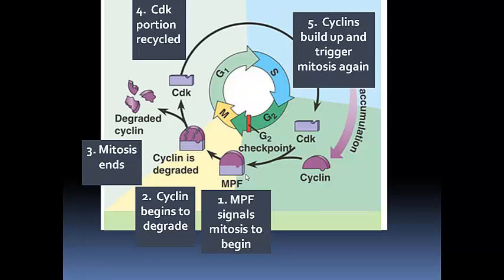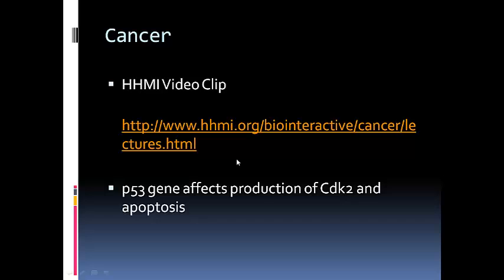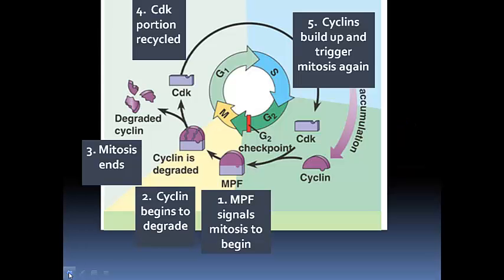The entire cell cycle is regulated in part by this MPF. In cases of people that have cancer, where the cell cycle is out of control and cells are making too many copies of themselves, what's happening is that interphase — where the CDK is not bound to a cyclin to make MPF — is very much shortened or nonexistent. Instead, we've got MPF on overdrive, lots and lots of MPF telling the cell to keep going through mitosis over and over again. That's what we call a cancer cell because it can't regulate its own reproduction, which eventually forms a tumor.